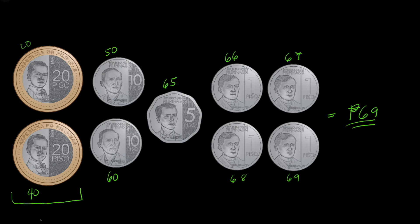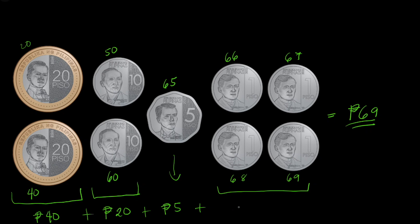Or we can simply add: two 20-peso coins equal 40 pesos, two 10-peso coins are worth 20 pesos, then one 5-peso coin plus four 1-peso coins worth 4 pesos. Adding them all together, you also get 69 pesos.